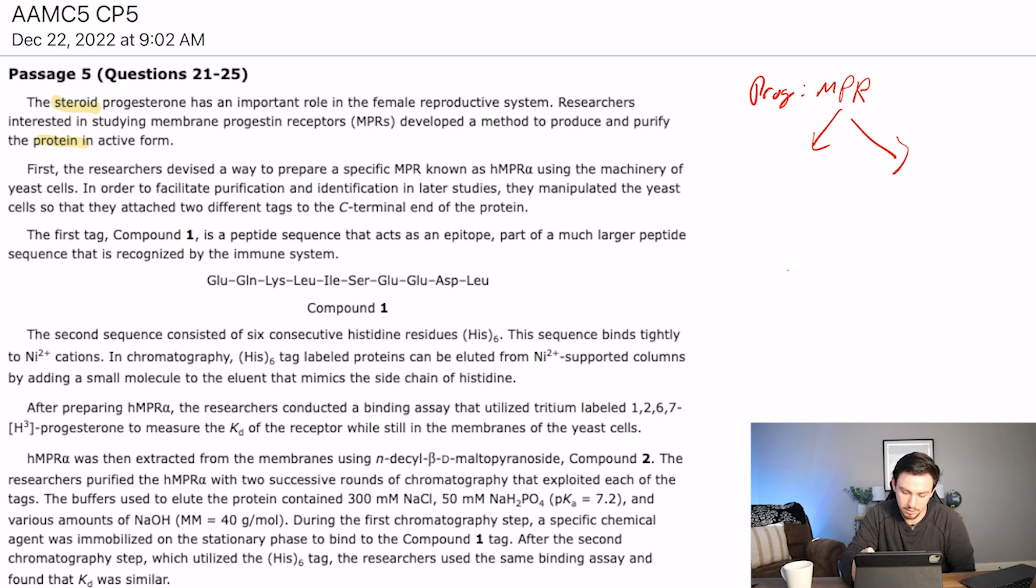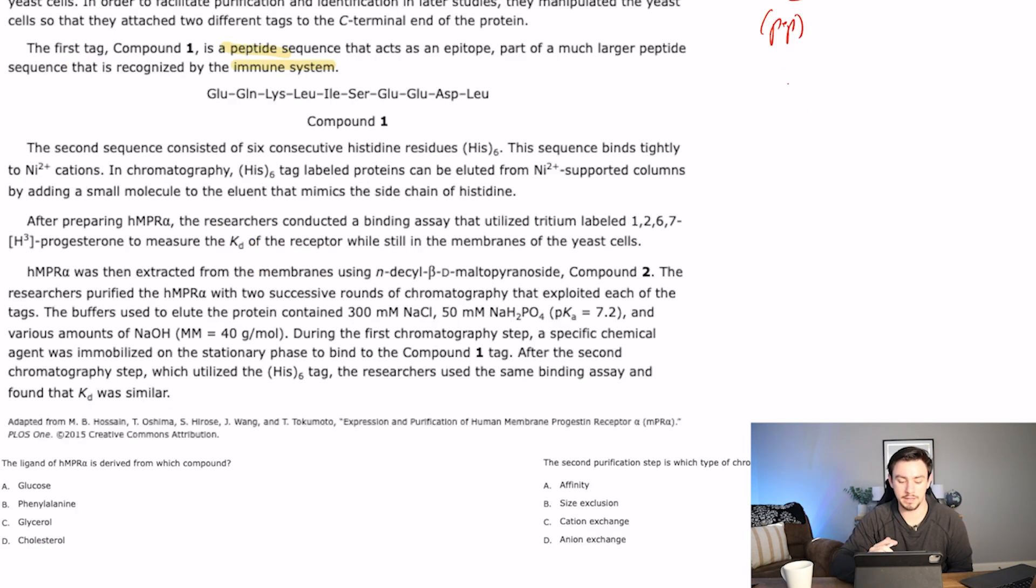The first tag, compound one, is a peptide sequence. So I'm just going to put pep here. So it's a peptide sequence, makes up proteins, that acts as an epitope, which is part of a larger peptide sequence that is recognized by the immune system. Okay, well, immune system is a basic science. Then they show us this compound. There's a lot of amino acids here, so that's definitely a topic that they could test us on.